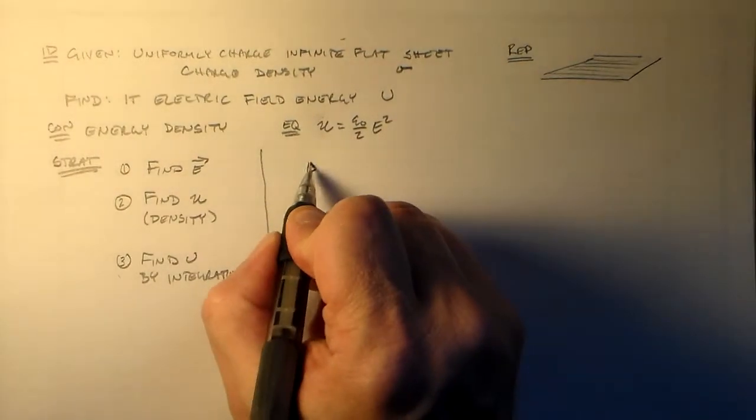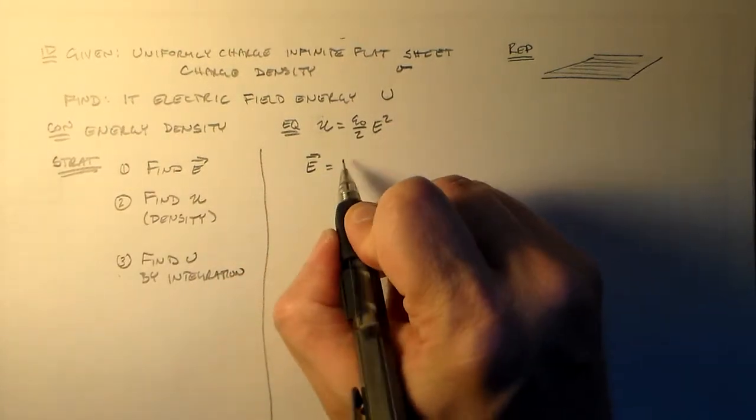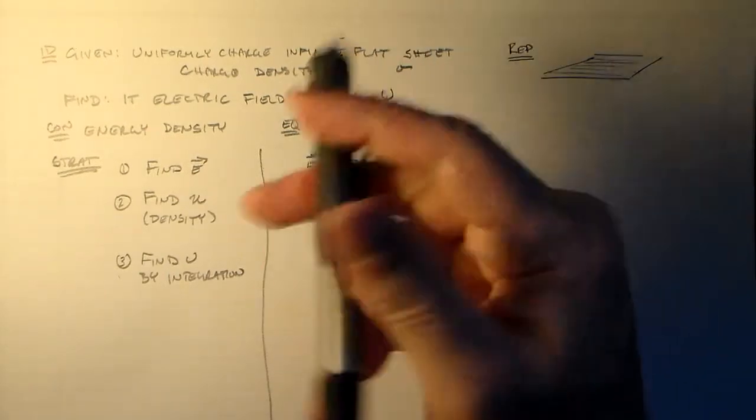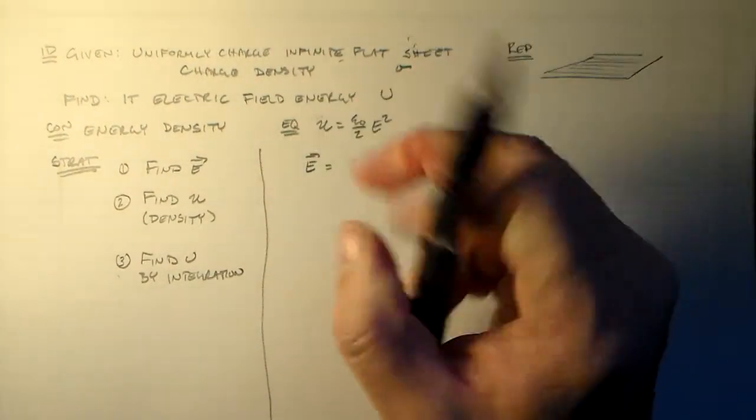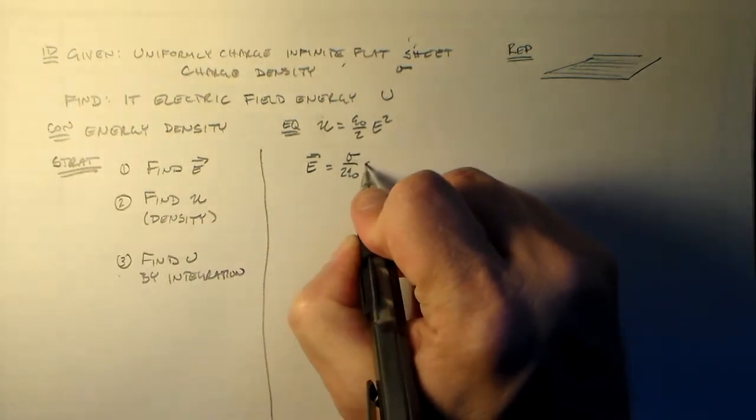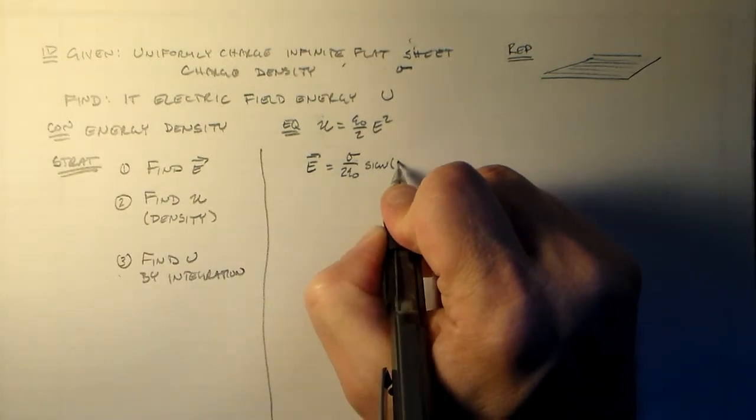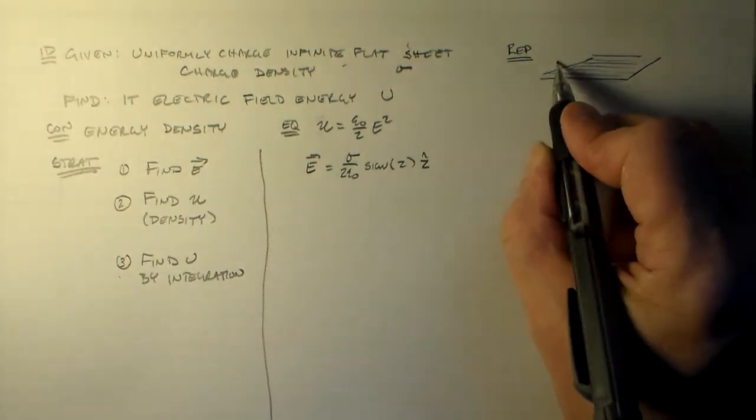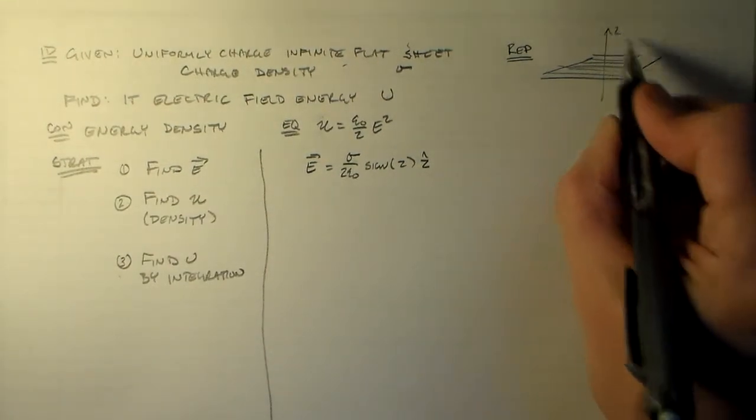So E, we've already done this a couple of times, is equal to sigma over 2 epsilon naught times the sine of z, z-hat. Assuming that this is in the x-y-plane and this is the z-direction, right?